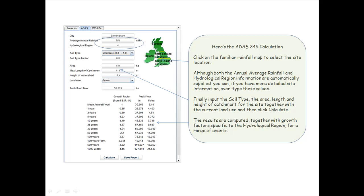Finally, input the soil type, the area, length and height of catchment for the site, together with the current land use, and then click Calculate. The results are computed together with growth factors specific to the hydrological region for a range of events.